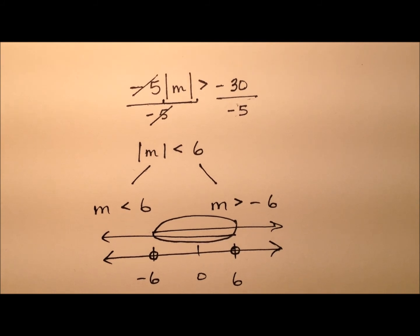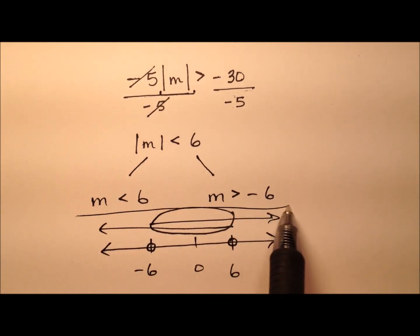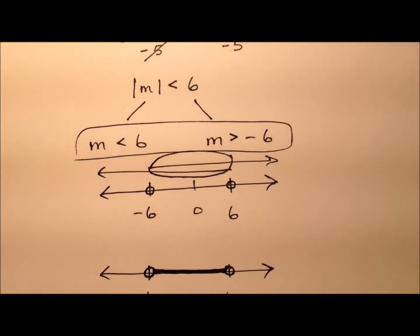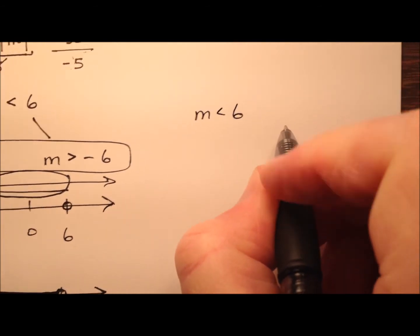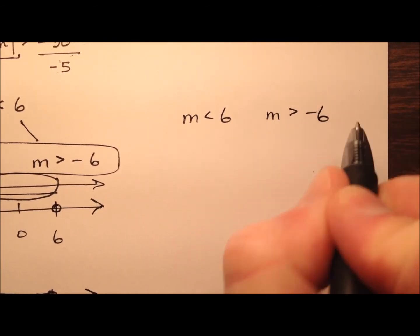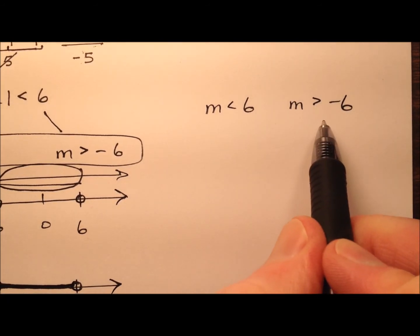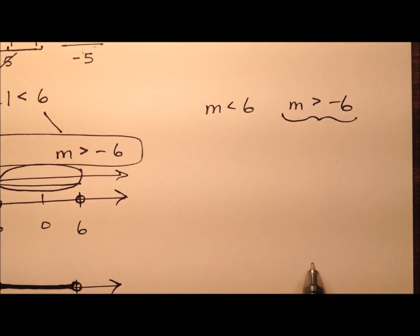But how can we write that numerically? So I have these two absolute value expressions. They are m is less than 6 and m is greater than negative 6. Well, I'm going to go ahead, and I want to look at this one in particular.